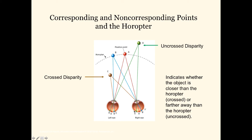We can see that object D is in a different location relative to other things. The distance between the green object D and object A, which we're fixating on, is greater on the right eye than on the left eye. Likewise, object C — which is closer to us than the horopter — is also going to be in different spots: one place on the left eye, but a different spot on the right eye. So the images of A and B, both on the horopter, are on corresponding points on the retina. The images of D and C, which are behind or in front of the horopter, will be on non-corresponding points.